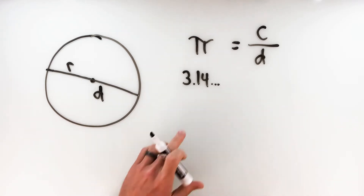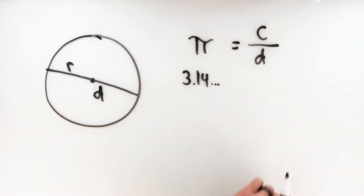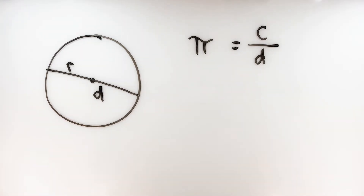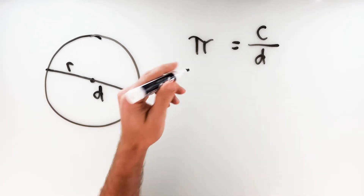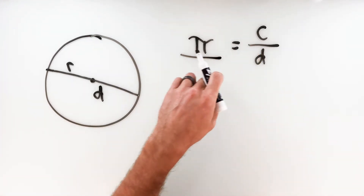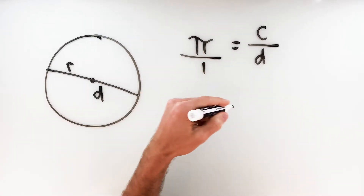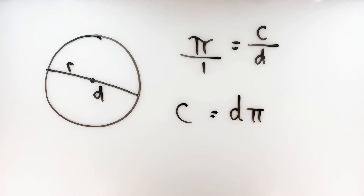To get around that, we can use 3.14 as an approximation, use the pi button on your calculator, or just leave your answer in terms of pi — meaning your answer will just have a pi in it. To derive the circumference formula, we use pi as circumference over diameter. Setting up a proportion and taking the cross product, we get that circumference times one equals diameter times pi. So the circumference of any circle equals pi times the diameter.